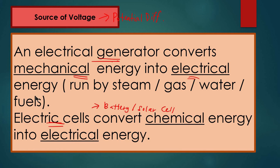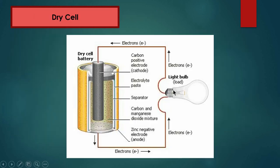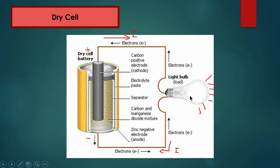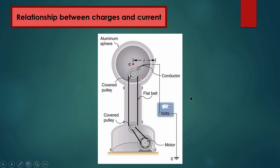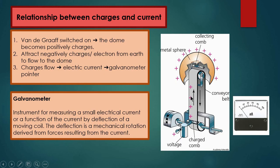An electric cell converts chemical energy into electrical energy. In a dry cell, electrons flow from negative to positive, however current flows from positive to negative. When current flows in a complete circuit, the light bulb will be lit.